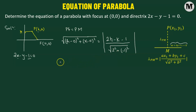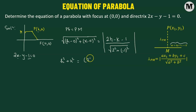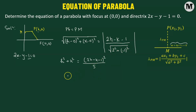Now we square both sides. Squaring gives us h squared plus k squared on the left. On the right hand side, we have 2h minus k minus 1, all squared in the numerator, divided by 5 — since squaring the square root of 5 gives 5. Cross-multiplying gives us 5h squared plus 5k squared equals the expansion of (2h minus k minus 1) squared.